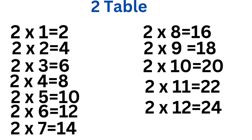1 more time. 2 1's are 2, 2 2's are 4, 2 3's are 6, 2 4's are 8, 2 5's are 10, 2 6's are 12, 2 7's are 14, 2 8's are 16, 2 9's are 18, 2 10's are 20, 2 11's are 22, 2 12's are 24.